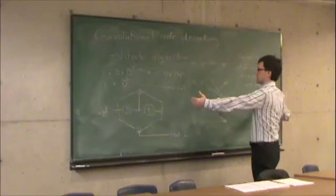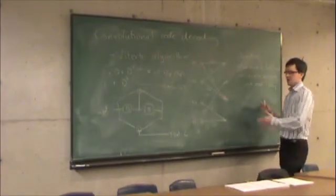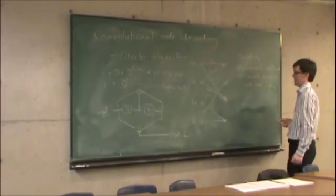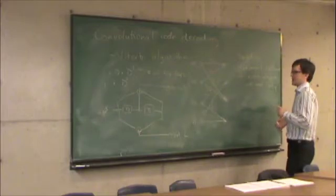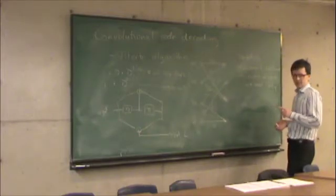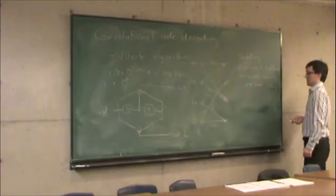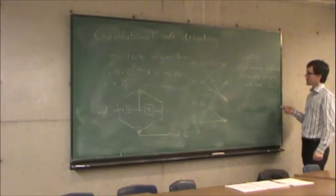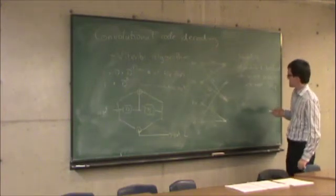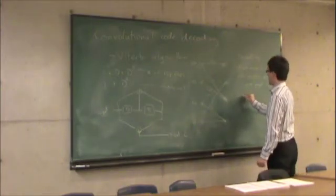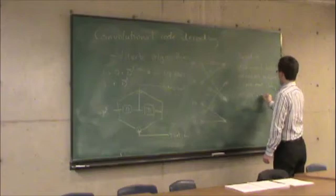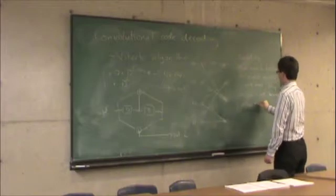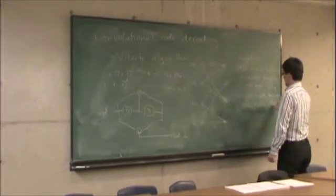So what I do is I construct a trellis diagram, as we did last time, of many trellis sections corresponding to all the possible input letters plus the zero padding. Don't forget the zero padding. The zero padding is there to force the convolutional code into the all zero state at the end. So the fewest possible number of errors is the most likely scenario.